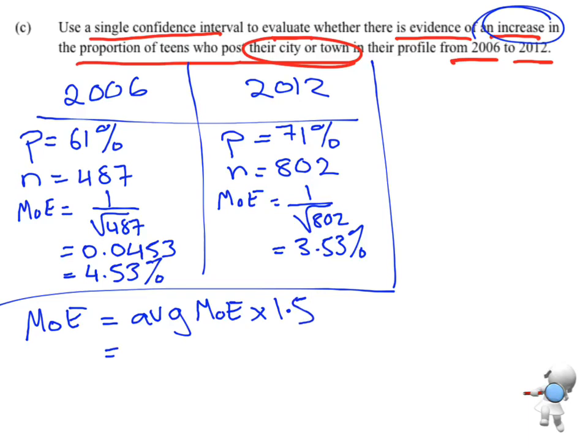So average, the word average means to add things together and divide by 2. Average is another name for mean. So I'm going to add these two margins of error here, 4.53 plus 3.53. I'm going to add them, divide by 2, and then I'm going to multiply all of that by 1.5. And that will give me 6.05%. So that's the overall margin of error that I want to use to do the confidence interval.